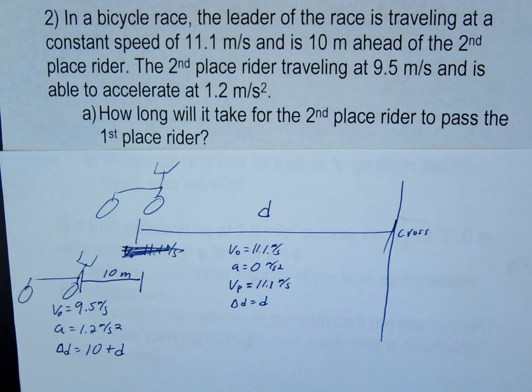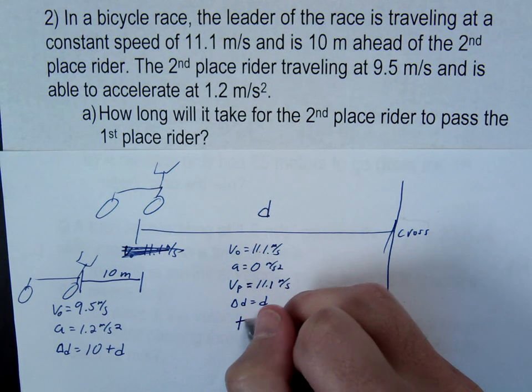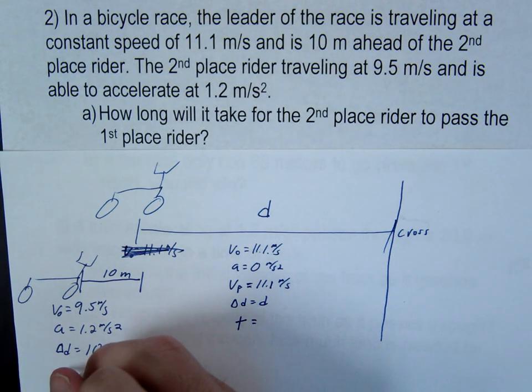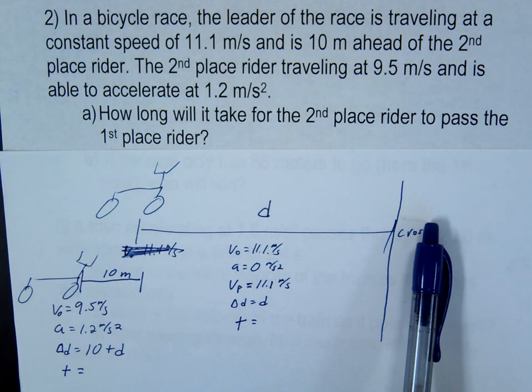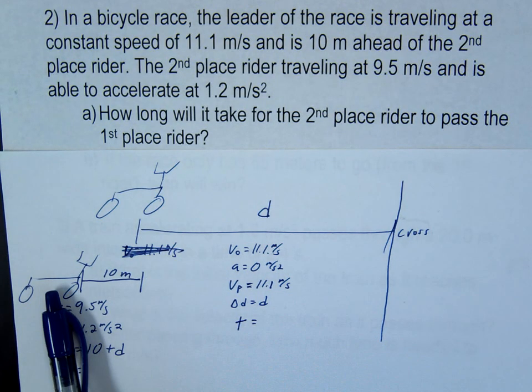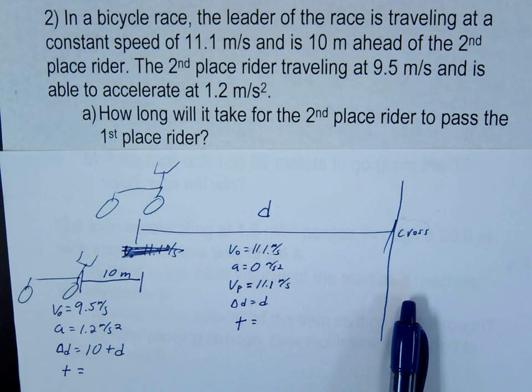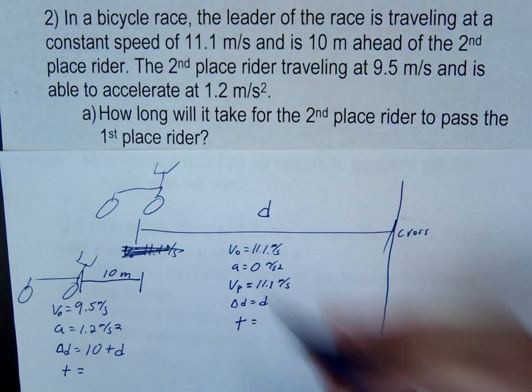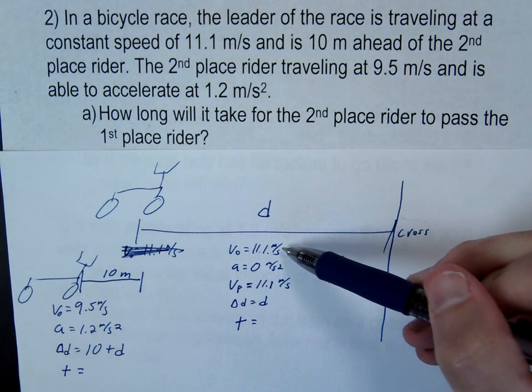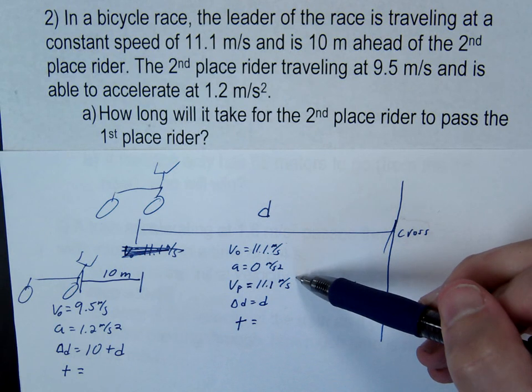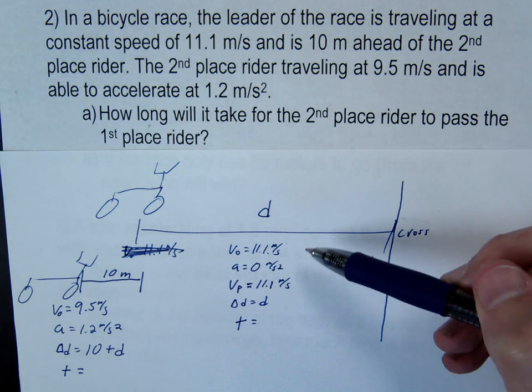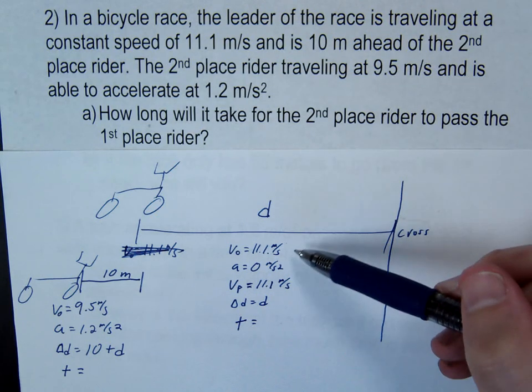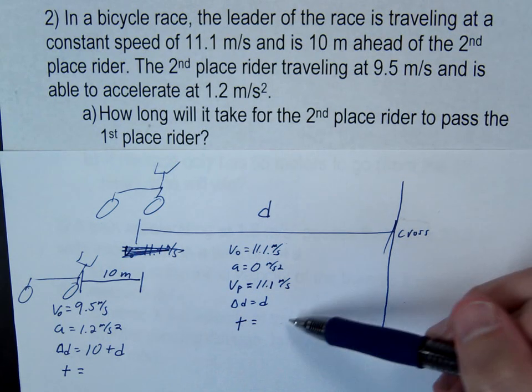Now ultimately, it's asking for time. The one thing with time is time is the same for both. The time it takes for this guy to reach the cross point is the same as the time it takes for this guy to reach the cross point. So we take a look. We're looking for time. I know one, two, three things, and I want to know the fourth. So maybe this problem's really easy. Well, let's see if it works.